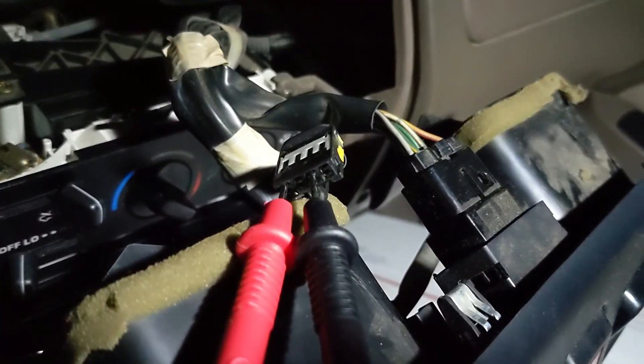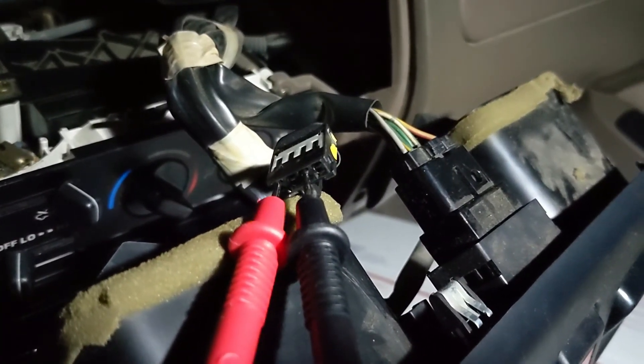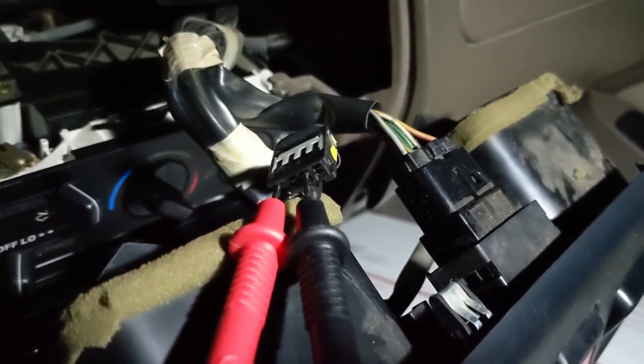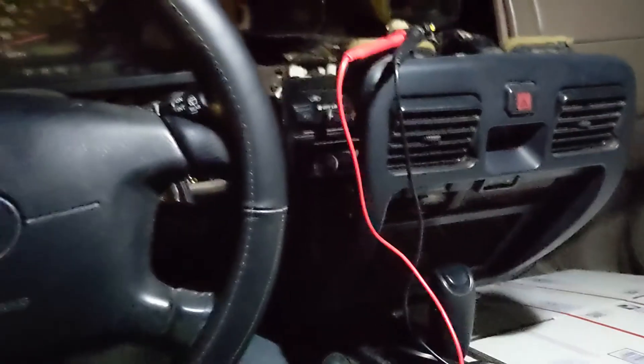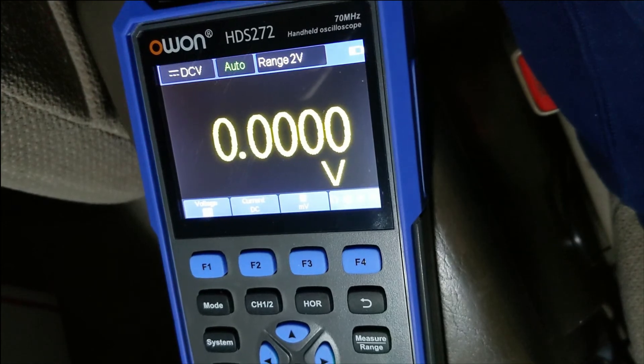All right, so now I have the negative in the ground, and I have the red in the very bottom pin, which is our ACC. Just as you can see, the vehicle is off, and we get a reading of zero volts.